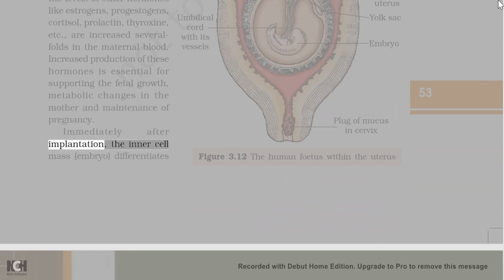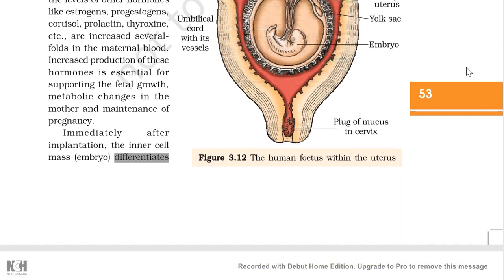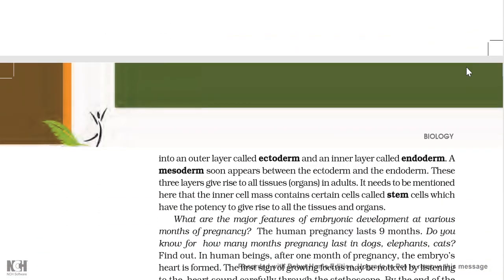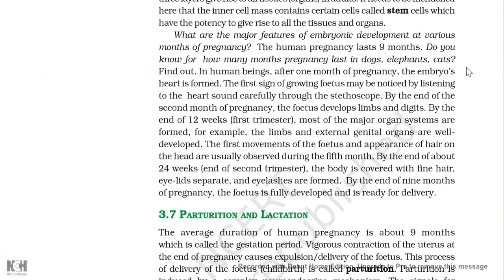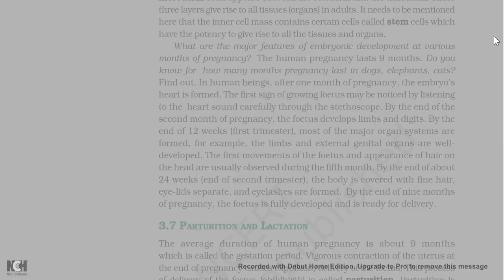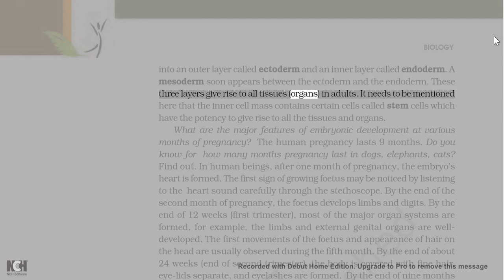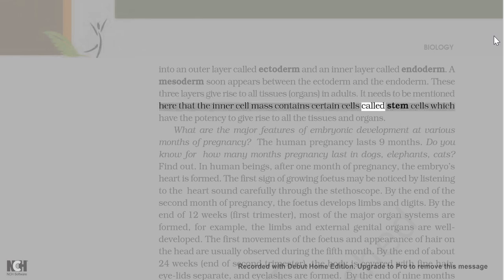Immediately after implantation, the inner cell mass (embryo) differentiates into an outer layer called ectoderm and an inner layer called endoderm. A mesoderm soon appears between the ectoderm and the endoderm. These three layers give rise to all tissues and organs in adults. It needs to be mentioned here that the inner cell mass contains certain cells called stem cells which have the potency to give rise to all the tissues and organs.